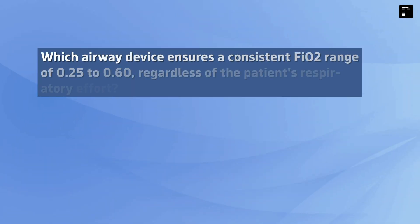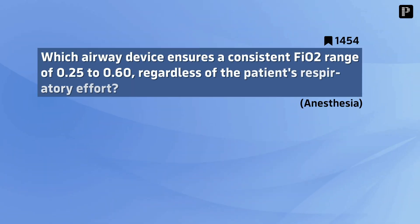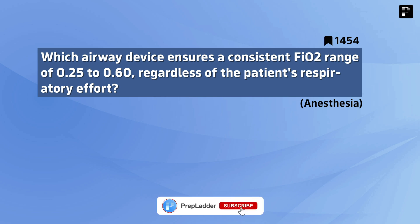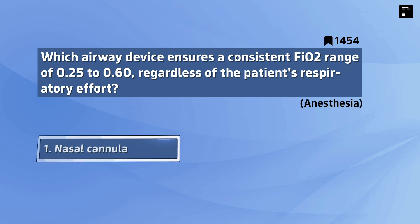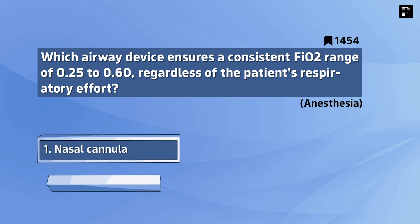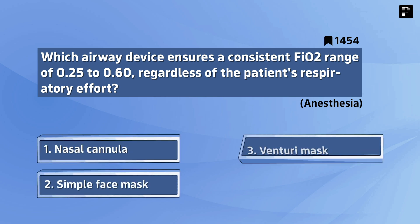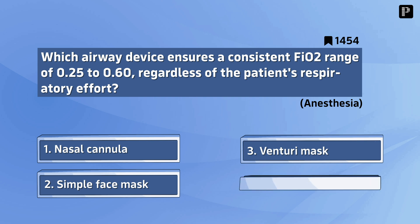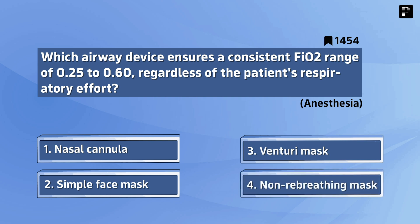Question 6: Which airway device ensures a consistent FIO2 range of 0.25 to 0.60, regardless of the patient's respiratory effort? Your options are: nasal cannula, simple face mask, Venturi mask, non-rebreathing mask. And the correct answer is Venturi mask.